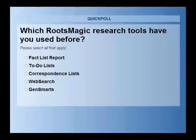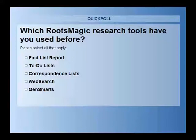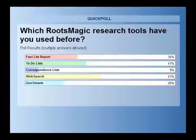Since we're talking about research tools, we're curious about which research tools in RootsMagic you've used before — the fact list report, the to-do lists, correspondence lists, the web search, and GenSmarts. Here are the results: 35% have used the fact list report, 41% have used to-do lists, only 9% have used the correspondence lists, 51% have used the web search, and 26% have used GenSmarts.